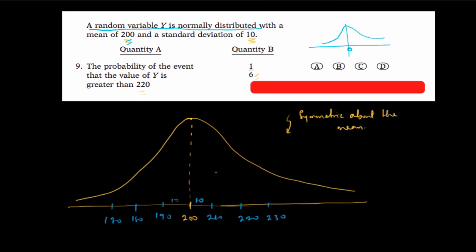Now we are given quantity B as 1 over 6, and I want to determine quantity A from this graph. Quantity A is the probability that Y is greater than 220. So 220 is this point here on the graph. Let's draw that down to mark the region.